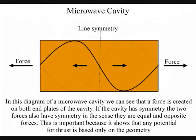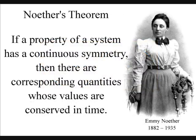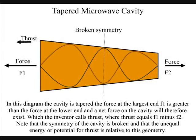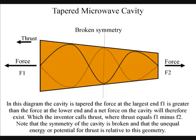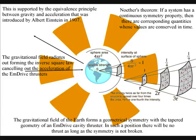In my first video, I explained that if the cavity had symmetry there would be no thrust. It is only the tapered geometry that breaks the symmetry, distorting the electromagnetic energy that forms the thrust. If we imagine the Earth with its gravitational field radiating out, forming the inverse square law, the tapered geometry of an m-derived cavity will fit into this geometry. In such a position, there will be no thrust as long as the symmetry is not broken.